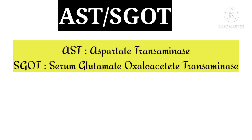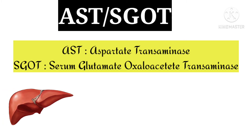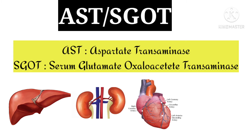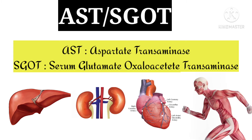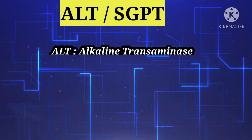AST stands for aspartate transaminase, also called serum glutamate oxaloacetate transaminase (SGOT). The normal levels of AST are 5 to 45 units per ml. Whenever there is liver destruction, AST levels will be increased. However, AST is not only synthesized in the liver — it is also produced by the kidneys, heart, and muscles.